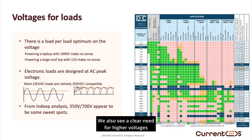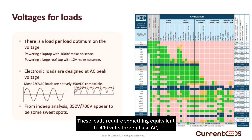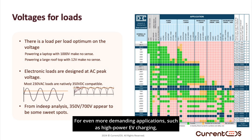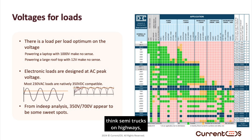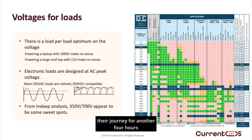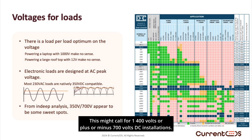We also see a clear need for higher voltages for more powerful loads, such as EV chargers or heat pumps. These loads require something equivalent to 400 volts three-phase AC, but in a DC system. For even more demanding applications, such as high-power EV charging — think semi-trucks on highways — we observe the need for much higher voltage bands. For example, charging a truck in 45 minutes so the driver can resume their journey for another four hours requires megawatts of power. This might call for 1,400 volts or plus or minus 700 volts DC installations.